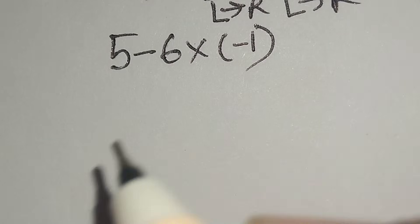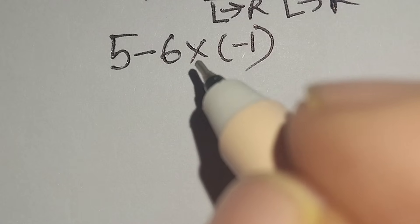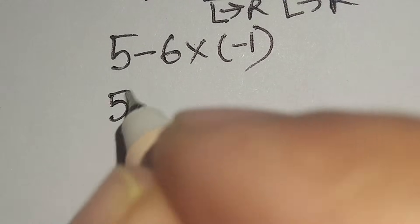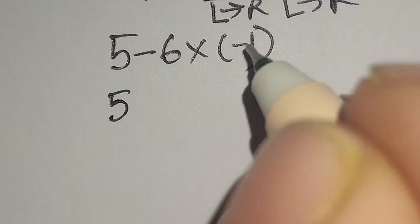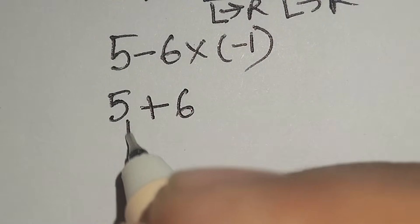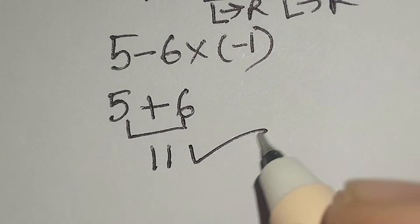According to the order of operations, now I have to work with this multiplication because multiplication has higher priority than subtraction. Therefore, this minus six times minus one gives us plus six. Five plus six gives us eleven, and this is the correct answer.